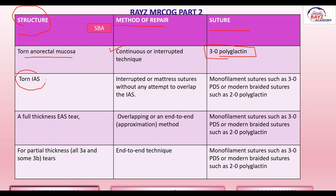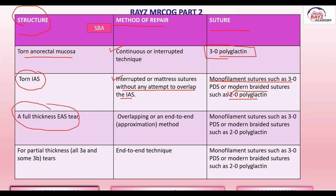If the internal anal sphincter is torn, it should be repaired using interrupted or mattress sutures. Importantly, the fibers of the internal anal sphincter should never be overlapped — repair is end-to-end only, without any attempt to overlap. The suture used is either 2-0 polyglactin (a multifilament, modern braided Vicryl suture) or 3-0 PDS monofilament.